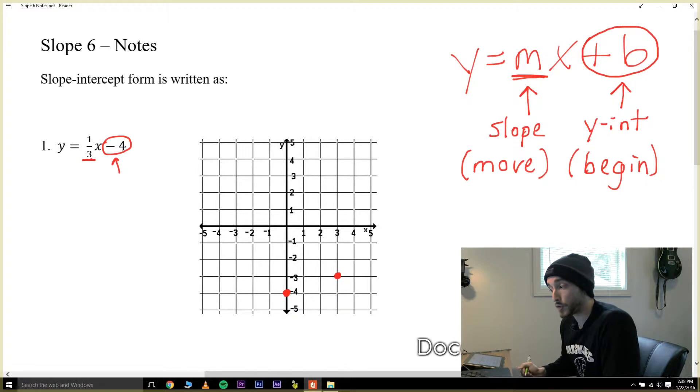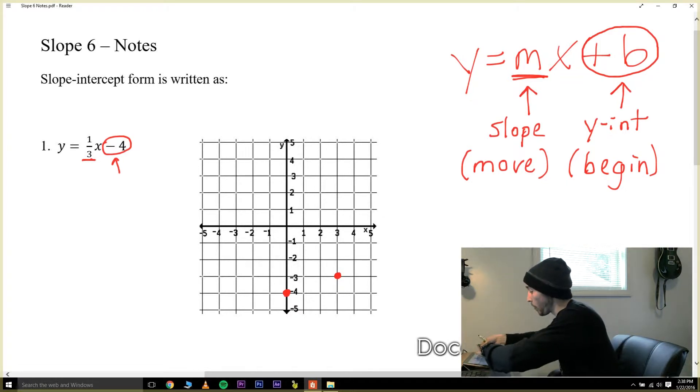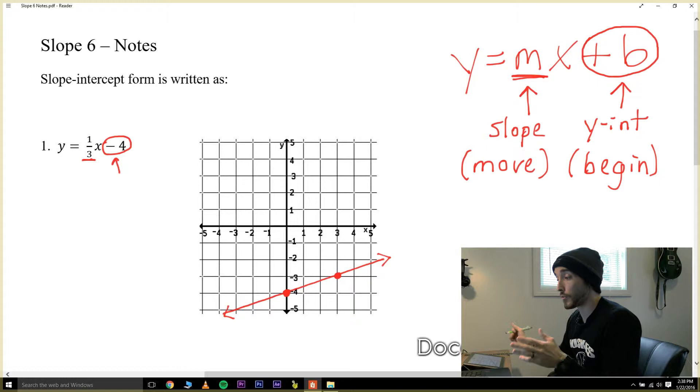Now that we have two points we can draw a line. Don't think of it so much as connecting the dots but more so drawing a line that goes all the way through both dots. This is a line that goes forever and ever in both directions. And now we've graphed the line using slope intercept form. To recap, we looked at the equation and said it begins at negative four, and from there it goes up one and right three.